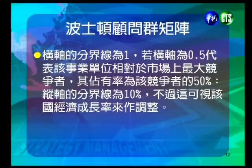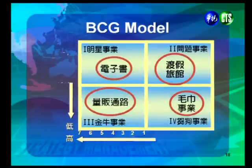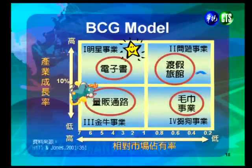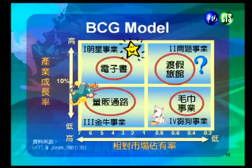橫軸的分界線以0.5表示，代表該事業相對於最大競爭者的占有率為其50%。縱軸的分界線是10%，可依據該國成長率調整。圖形左上角第一個區塊是明星事業，指高市占率與高成長率的事業，例如電子書這樣的事業。